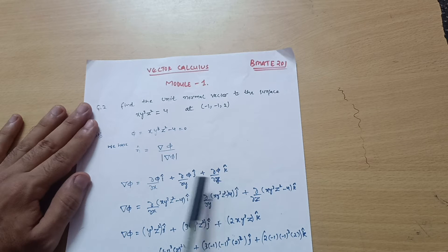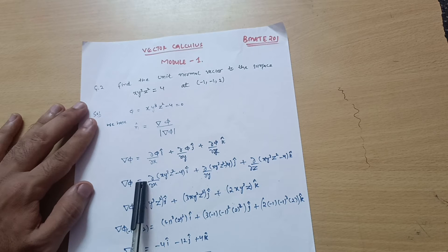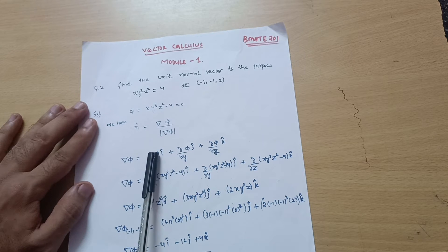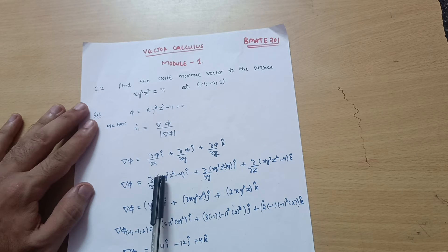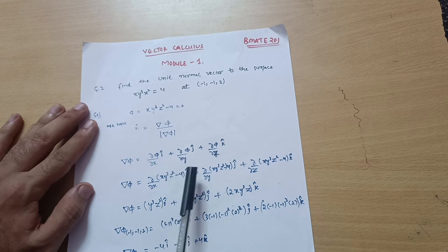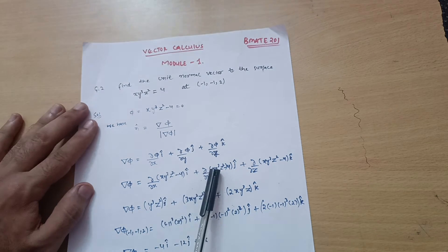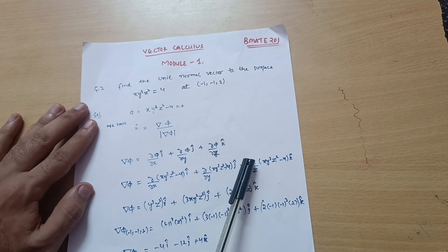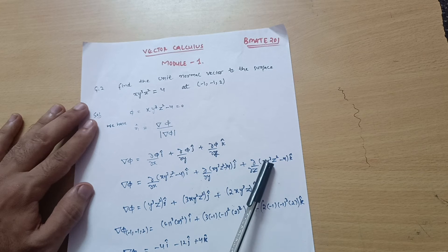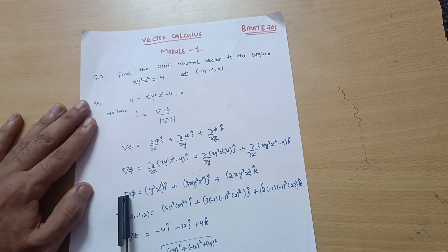So ∇φ = (∂/∂x)(xy³z² − 4) î + (∂/∂y)(xy³z² − 4) ĵ + (∂/∂z)(xy³z² − 4) k̂. We differentiate φ = xy³z² − 4 with respect to x, y, and z respectively.